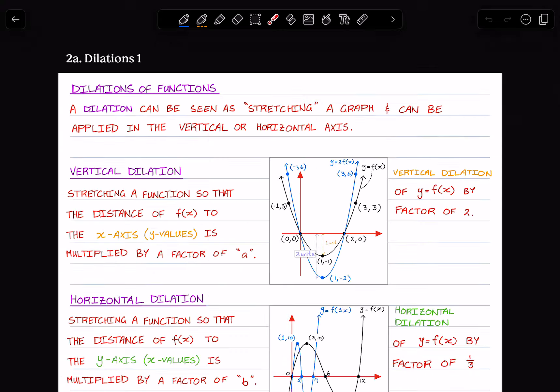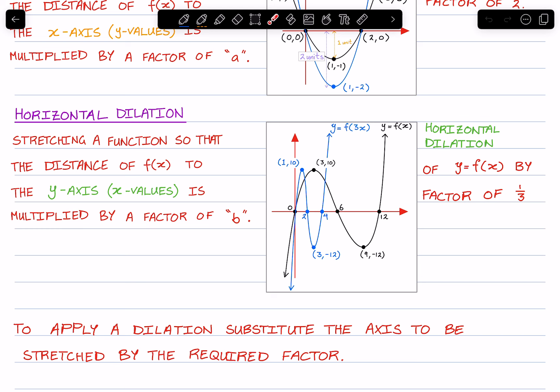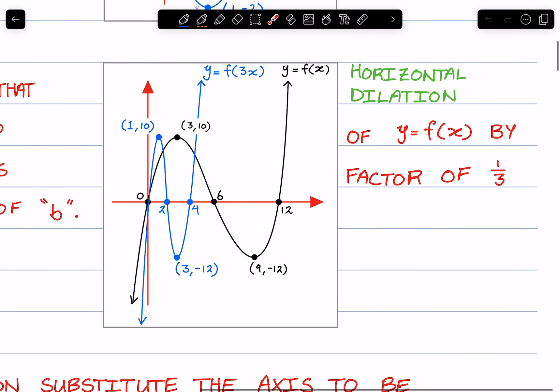The same can be said about the horizontal dilation. We are stretching the function so that the distance of the function to the y-axis, so the x values, is multiplied by a factor of b. So here it is again. The original graph, y equals f of x.